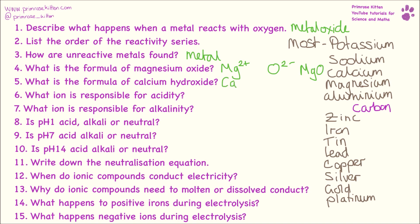Calcium hydroxide: our calcium ion is Ca²⁺ and our hydroxide ion as a whole is 1⁻. Now if you have two positives and one minus, that still leaves one plus overall, so we need to have another negative in there as well, giving us a formula of Ca(OH)₂.